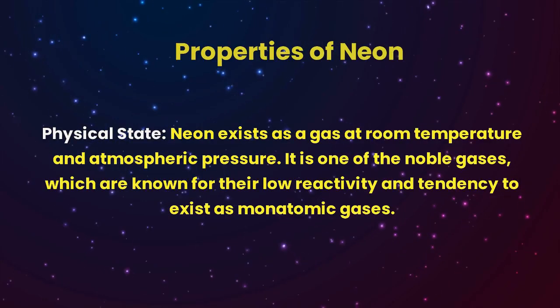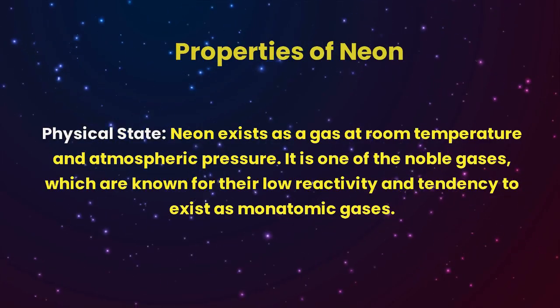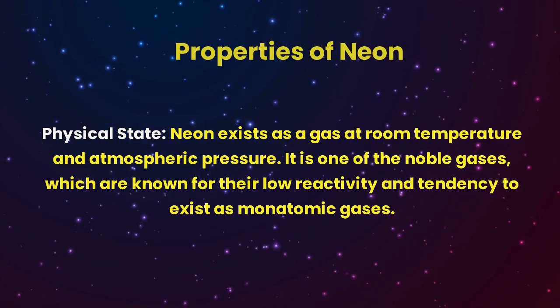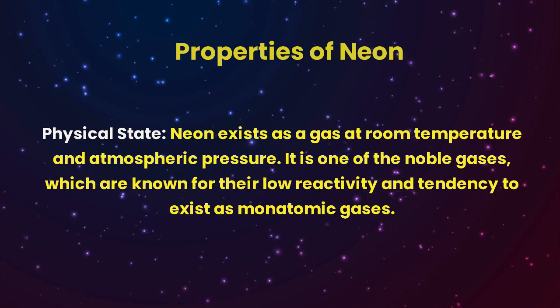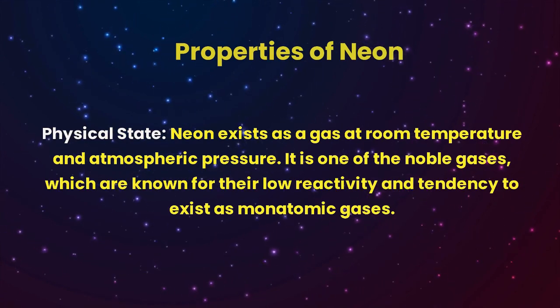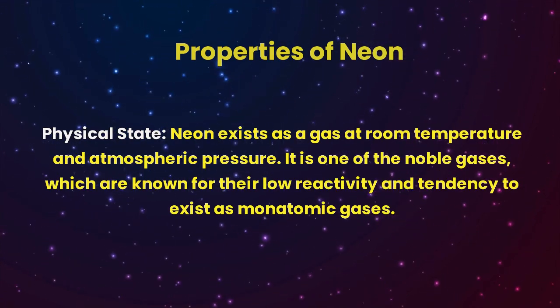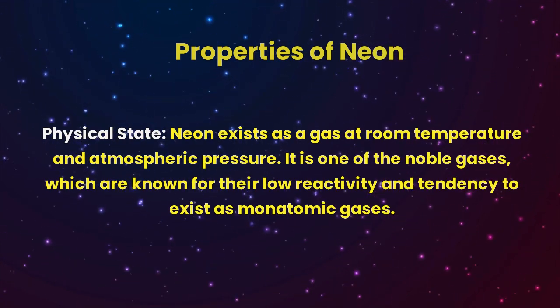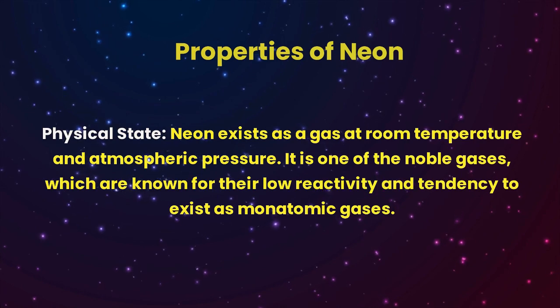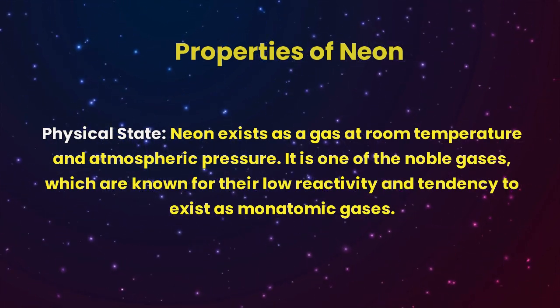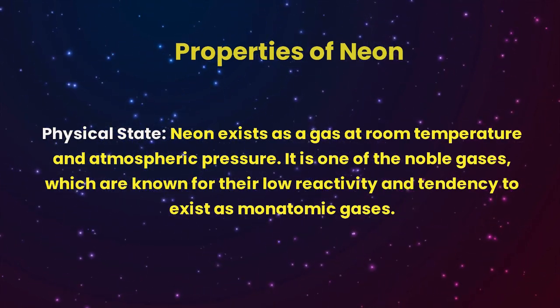Properties of neon. Physical state: Neon exists as a gas at room temperature and atmospheric pressure. It is one of the noble gases, which are known for their low reactivity and tendency to exist as monatomic gases.